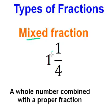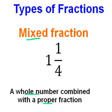A mixed fraction. Here we have a fraction: 1 whole and 1 quarter. If we have a fraction like this, where we have a whole number combined with a proper fraction — that is the quarter — we call that a mixed fraction. So 1 and 1 quarter is a mixed fraction.